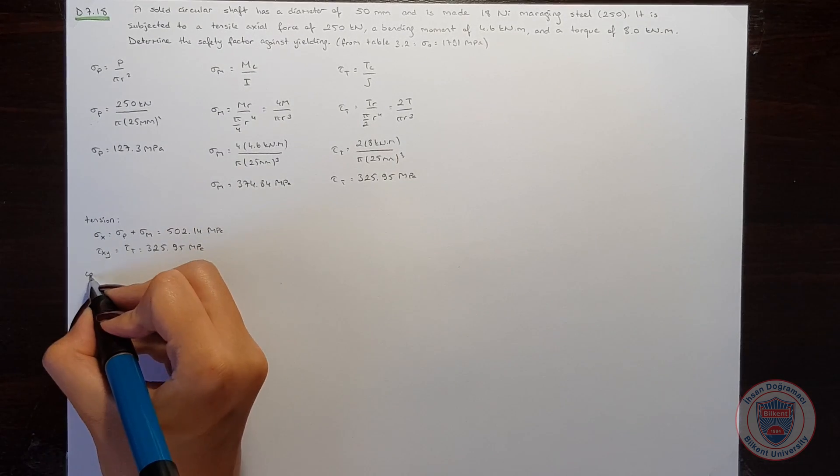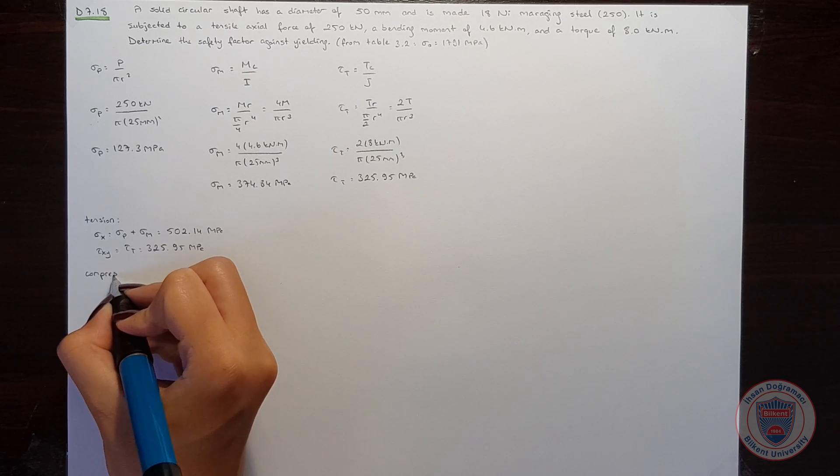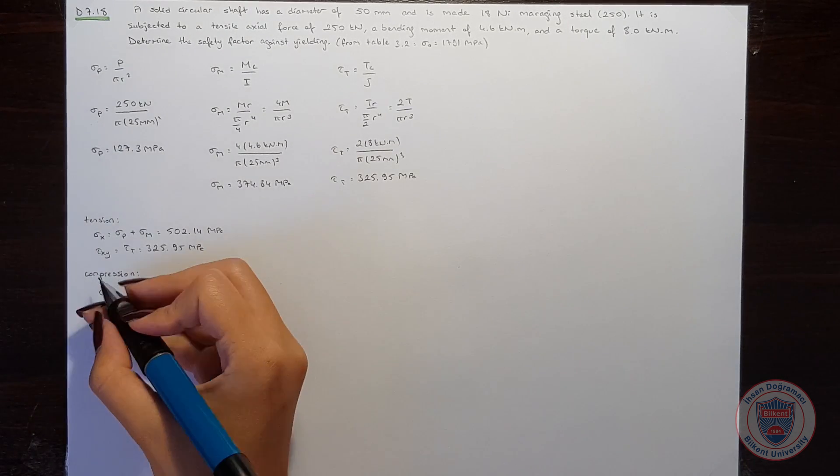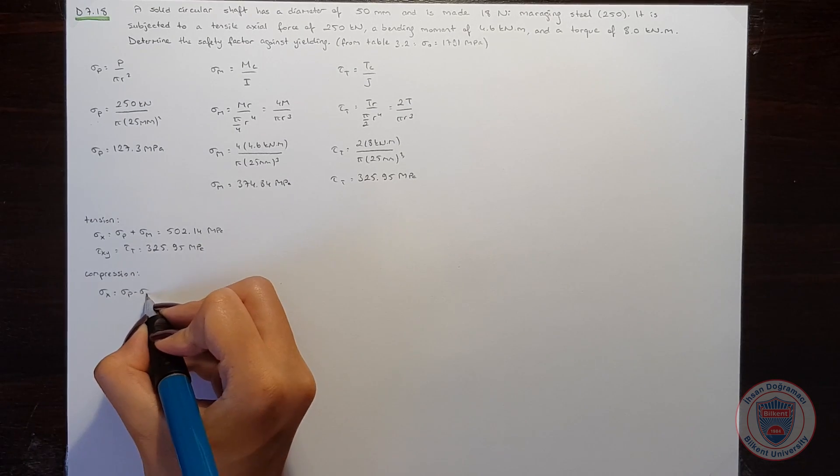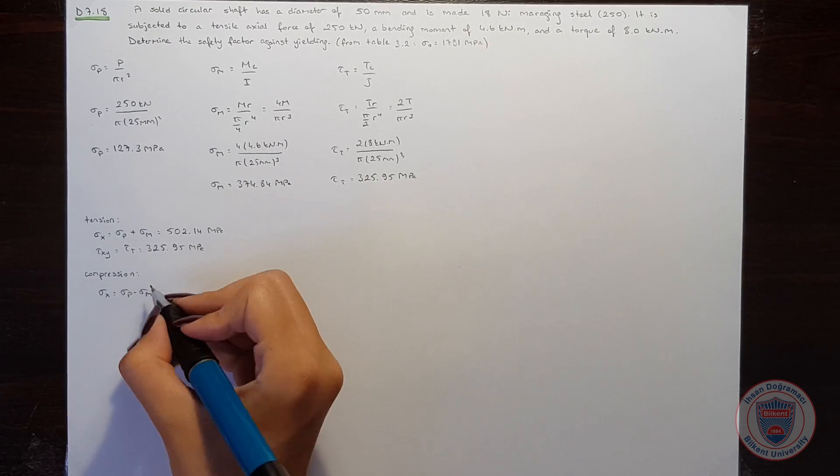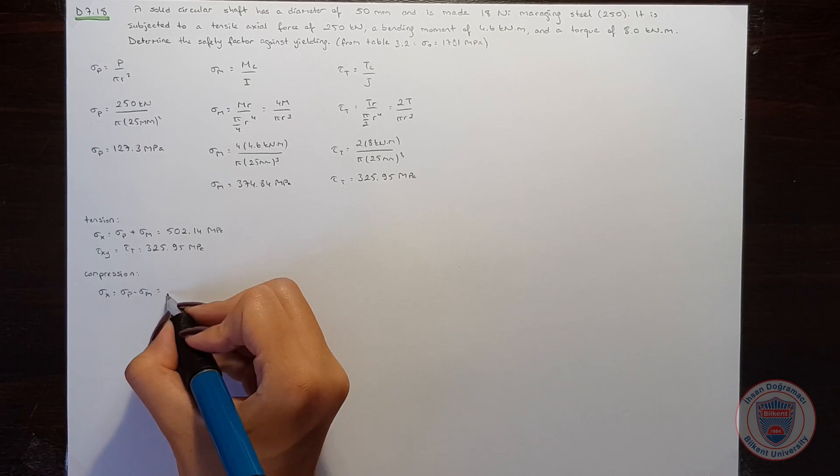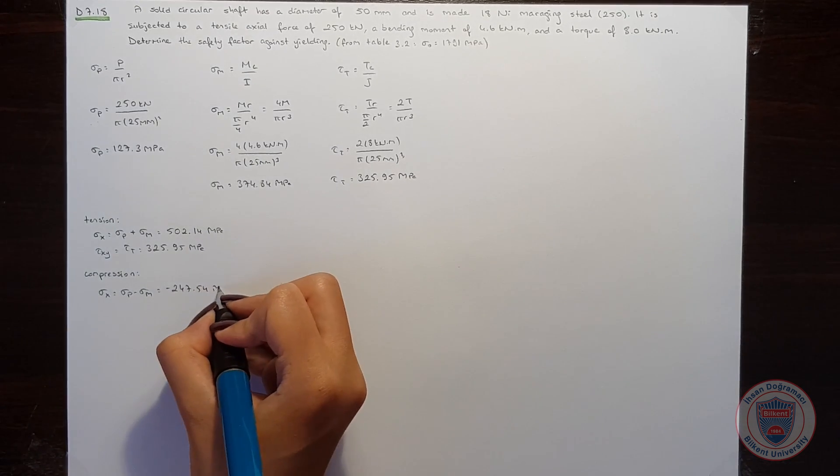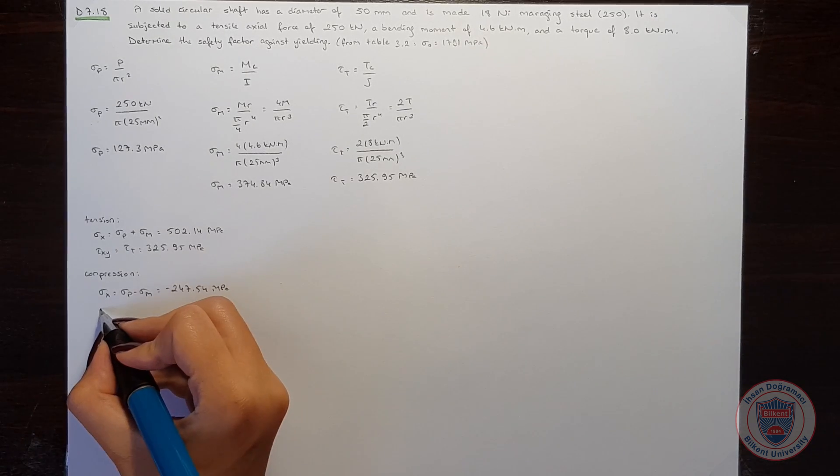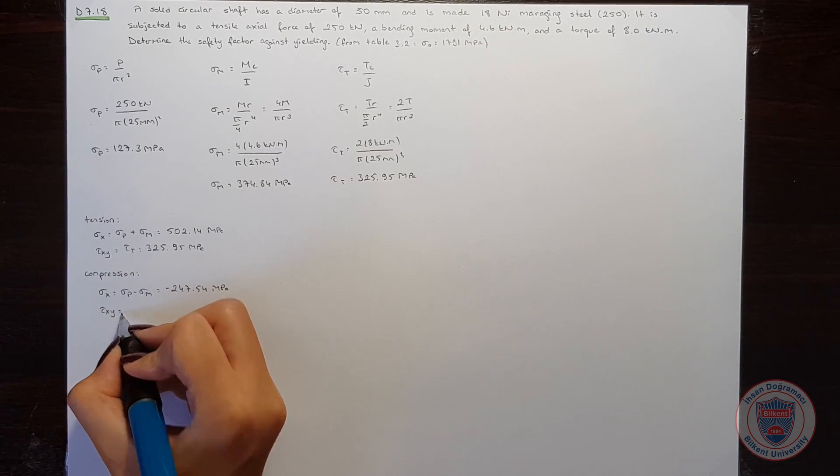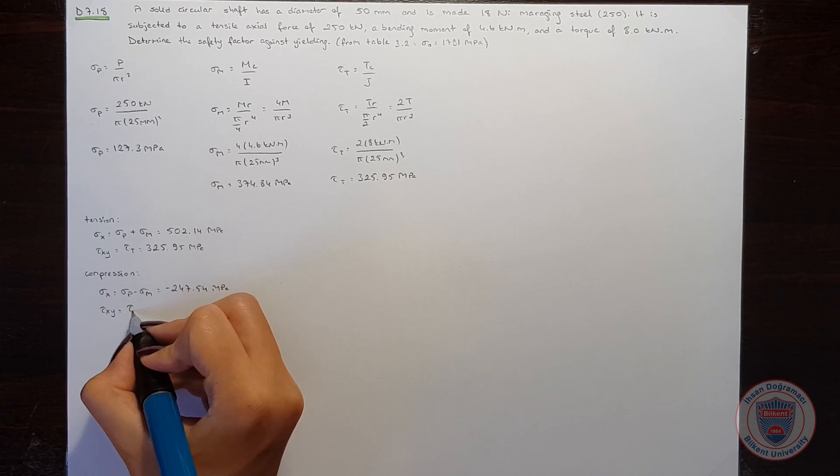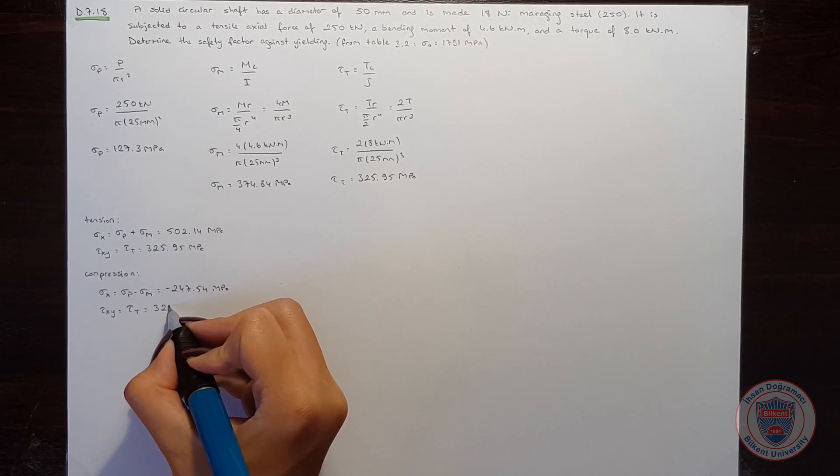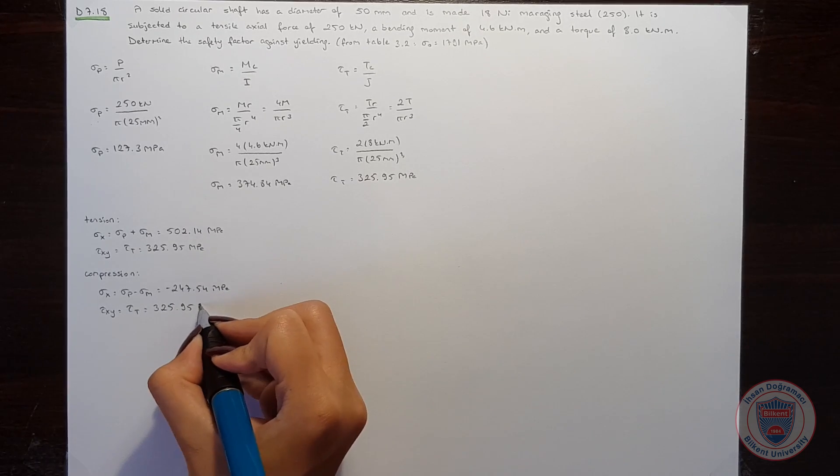And in case of compression, sigma x will be sigma p minus sigma m in this case. And it will be minus 247.54 MPa. And tau xy will be, again, tau t and it is 325.95 MPa.